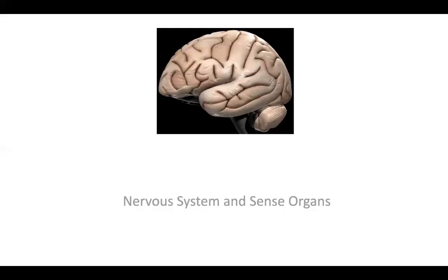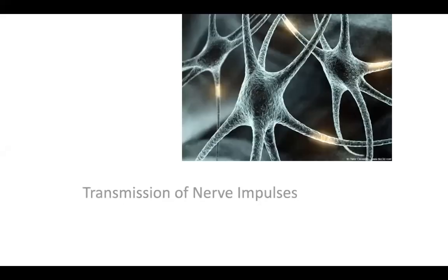I wanted to start the nervous system because we are three units behind, but I already have a plan for that. Everything will be covered in time, so you won't miss out on anything. Today's topic is going to be on the transmission of nerve impulses. I'm going to start by talking about the structure of a neuron and then explaining how an impulse travels through the nerve.